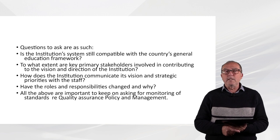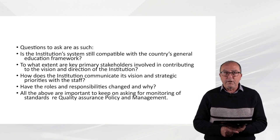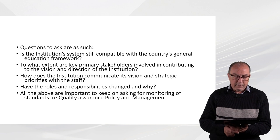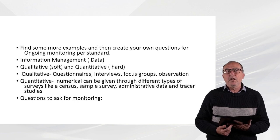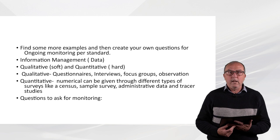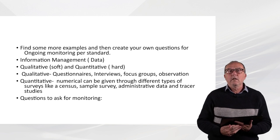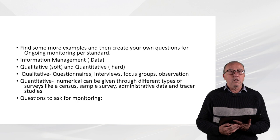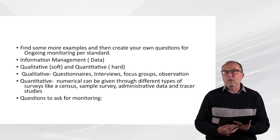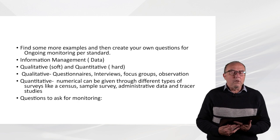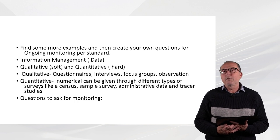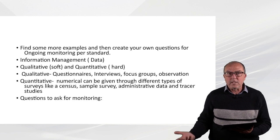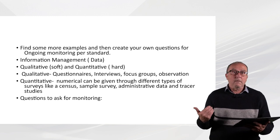You can find more examples and create your own questions for ongoing monitoring per standard. Information management, which we will also speak about in part two, is very important. The information can be qualitative — which is soft — and quantitative — which is hard. Qualitative examples can be questionnaires, interviews, focus groups or observation. Quantitative data can be numerical and collected through different types of surveys, like a census, sample survey, administrative data, and tracer studies.